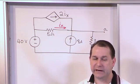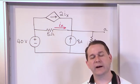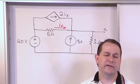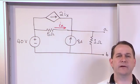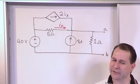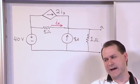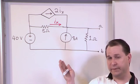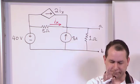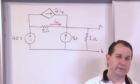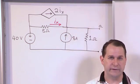It doesn't change much because you have a dependent source in there. What you're trying to do is figure out, looking from terminals A and B, what's this circuit going to behave like? And it turns out, just like all the other circuits we've been doing before, that you can model this circuit between terminals A and B with a constant voltage source and a resistor. We'll call it the Thevenin voltage source and the Thevenin resistance.